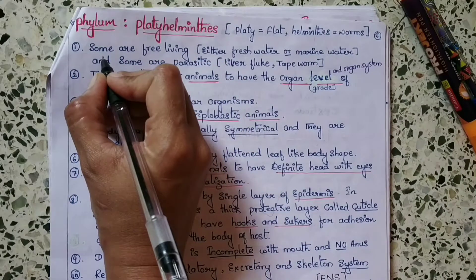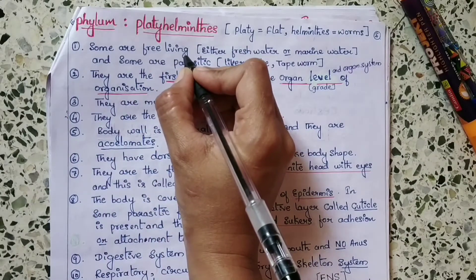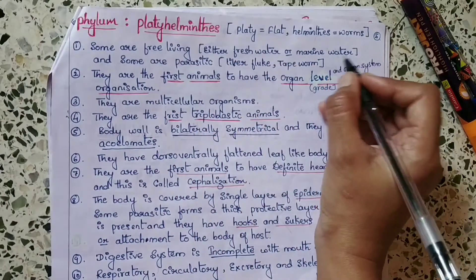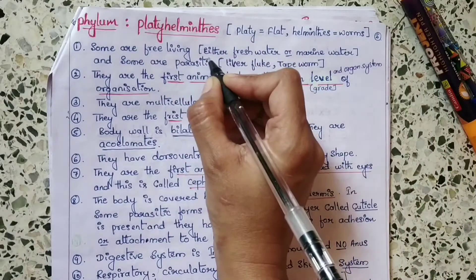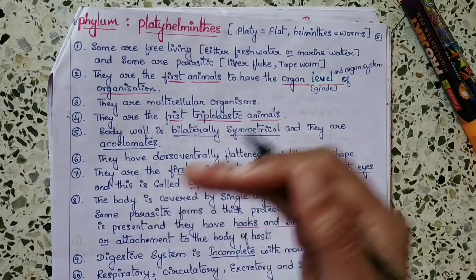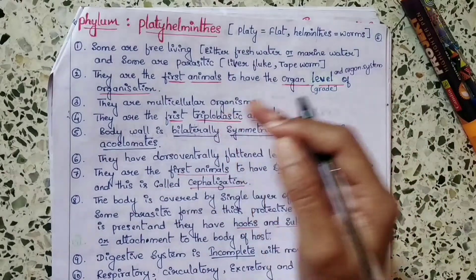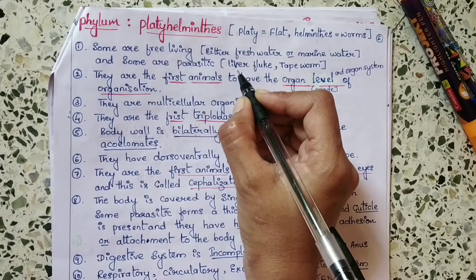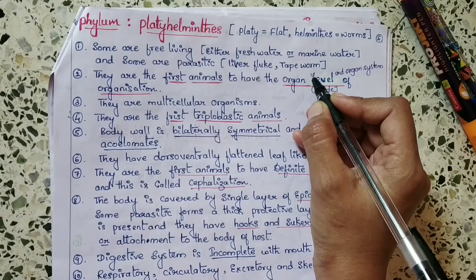Platyhelminthes are some free-living, meaning they are either freshwater forms or marine water forms, and some are parasitic. Parasitic means the organisms which depend upon another organism for their living. For example, liver flukes and tapeworms are examples of this.